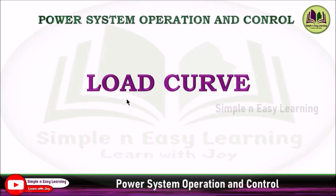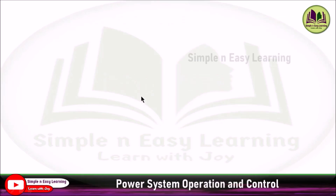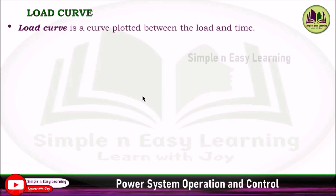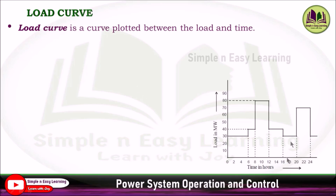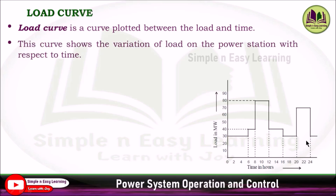Today we are going to discuss the load curve and load duration curve in power system operation and control. A load curve is a curve plotted between load and time — take load on the y-axis and time on the x-axis, and based on the load variation we plot a graph. That curve is called the load curve, and it shows the variation of load on the power station with respect to time.